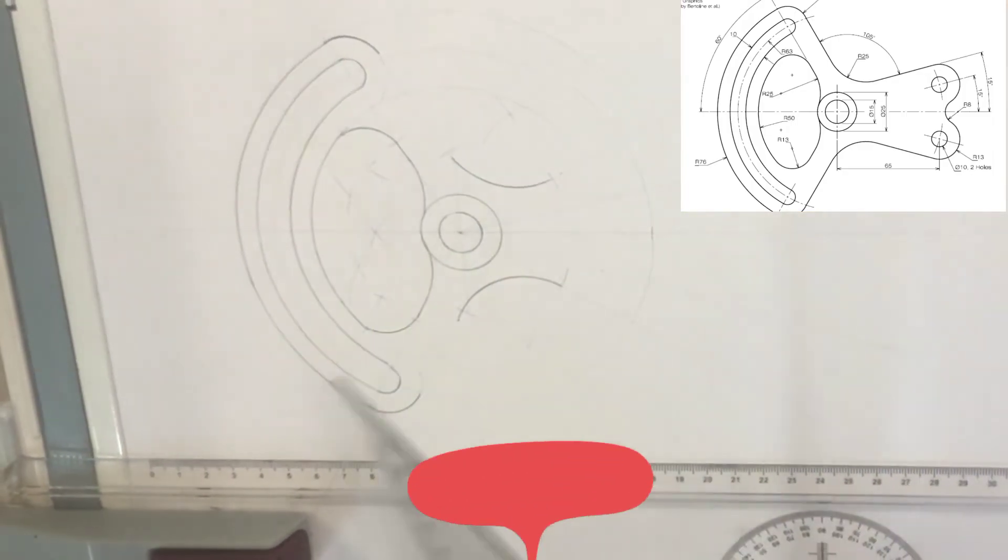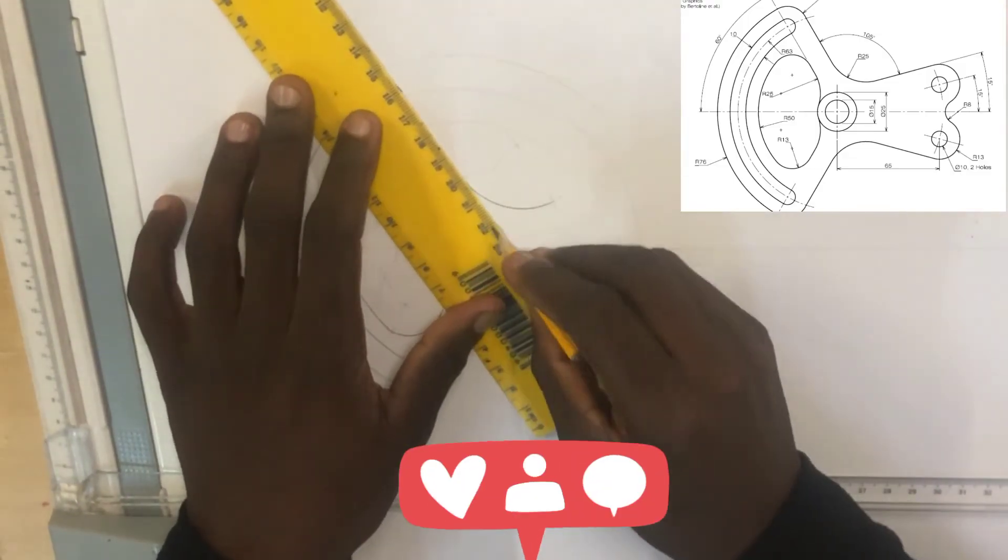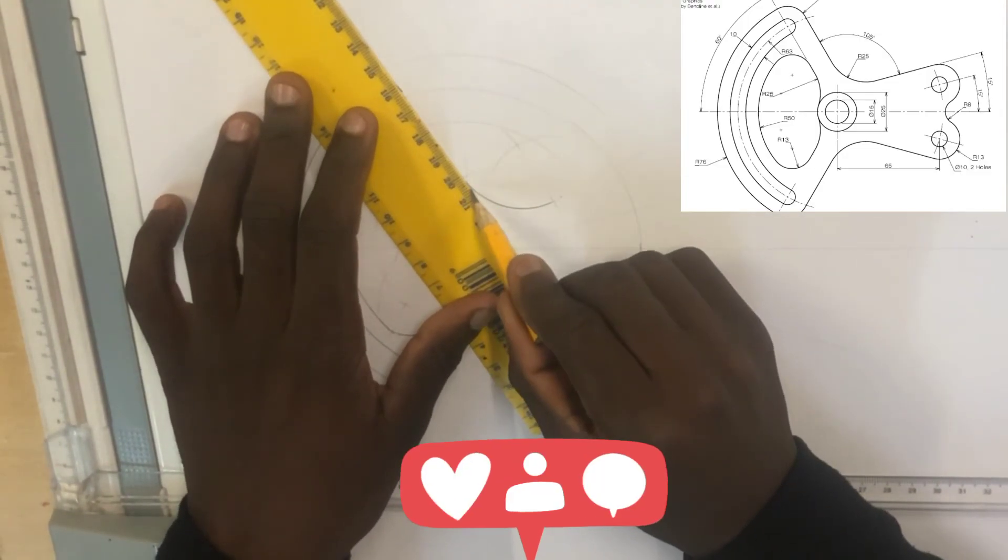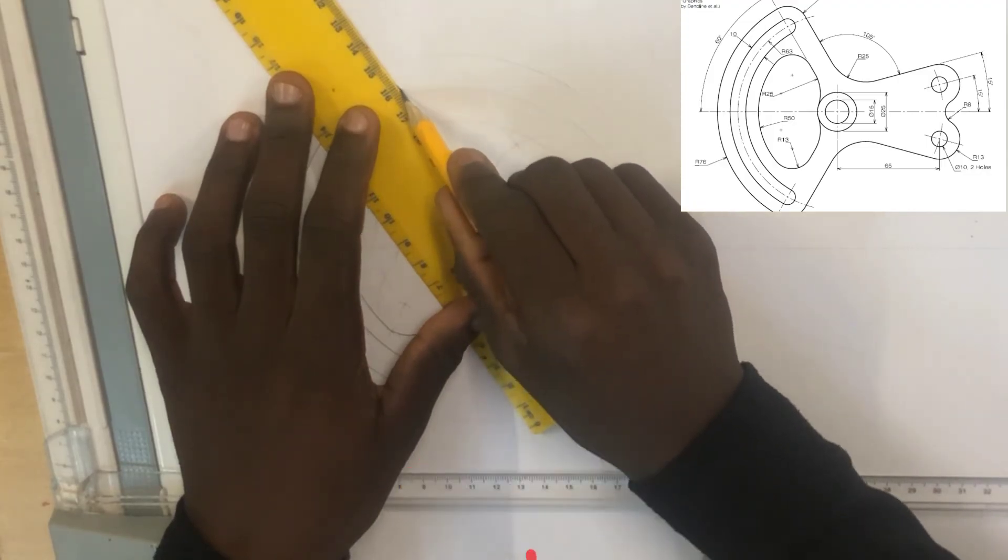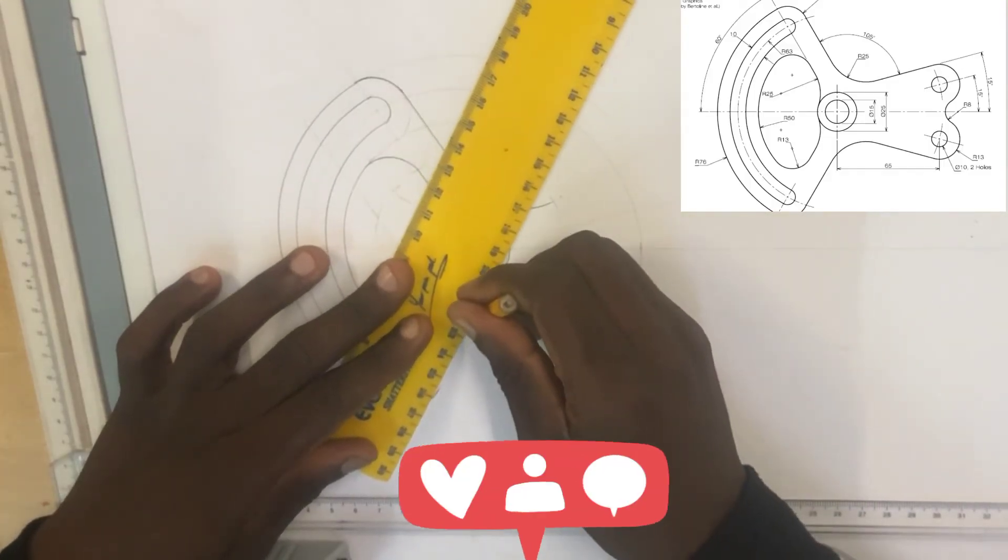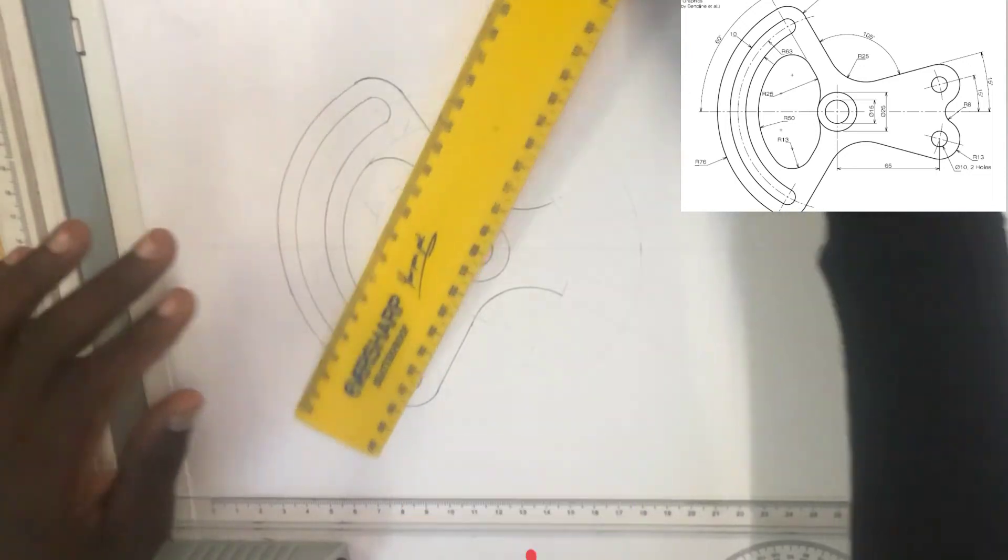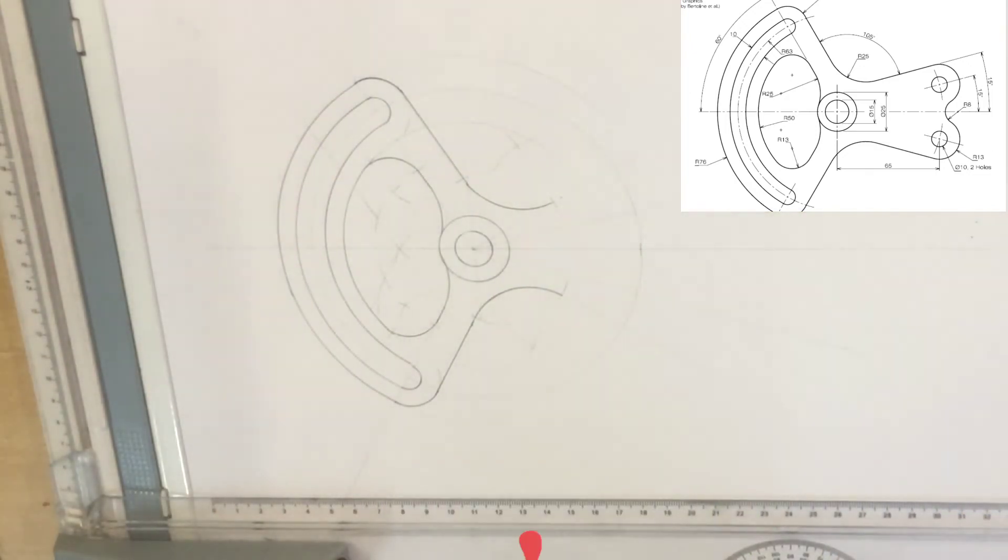So I just open my compass at radius of 25 and stand at the intersection of that diagonal line and that 15 degree line, then bisect them. This is the center of my arc. Do the same here and you can join these two lines.